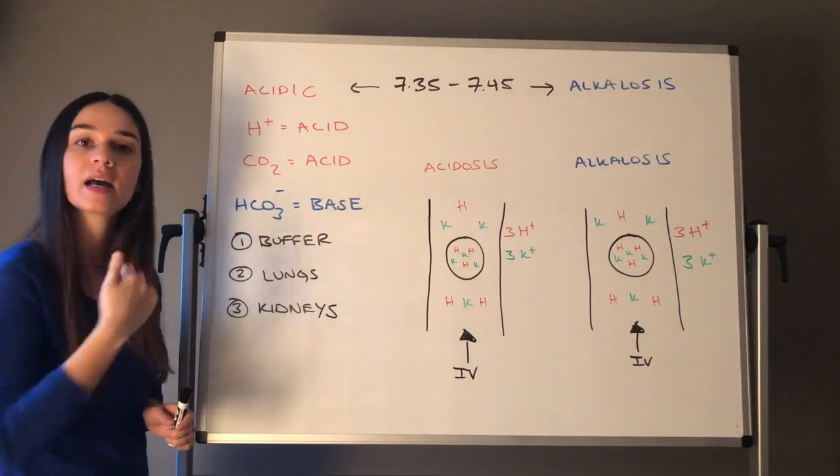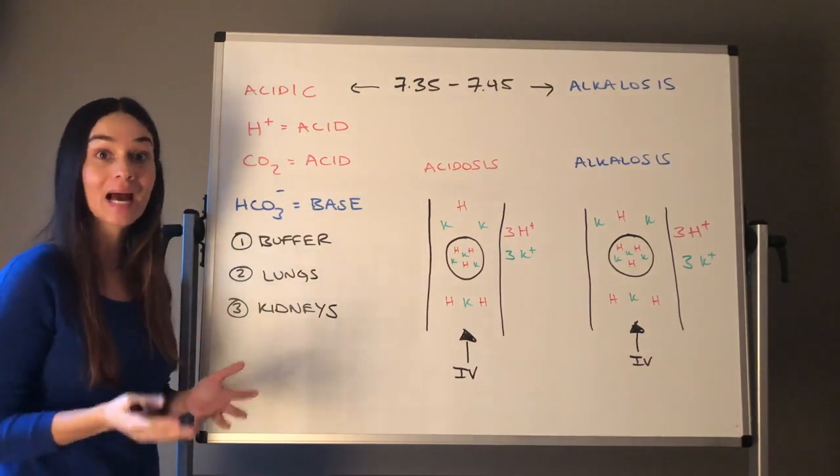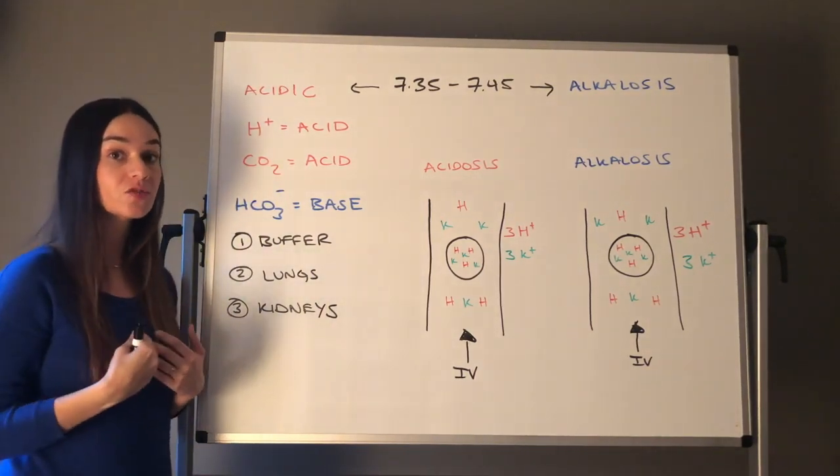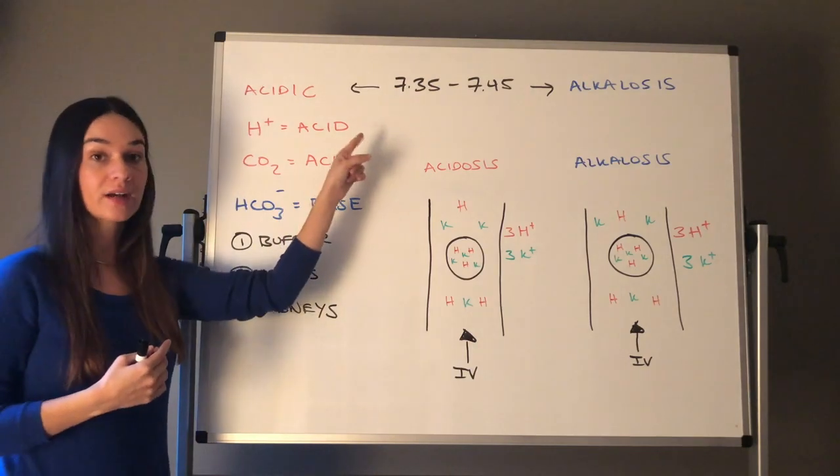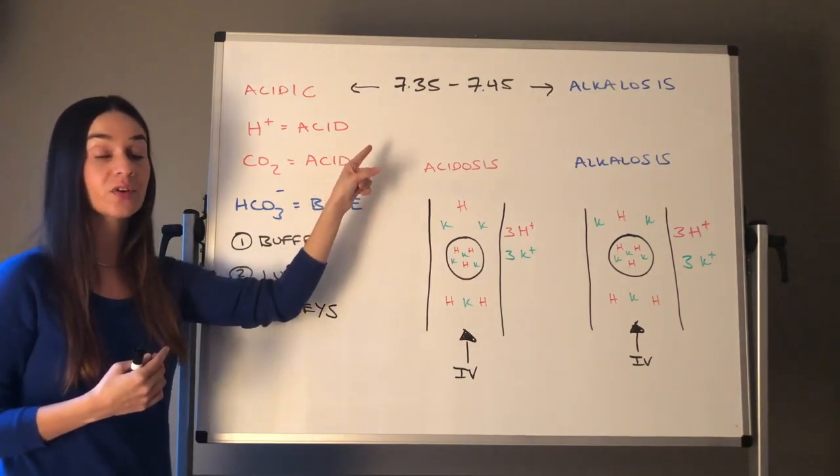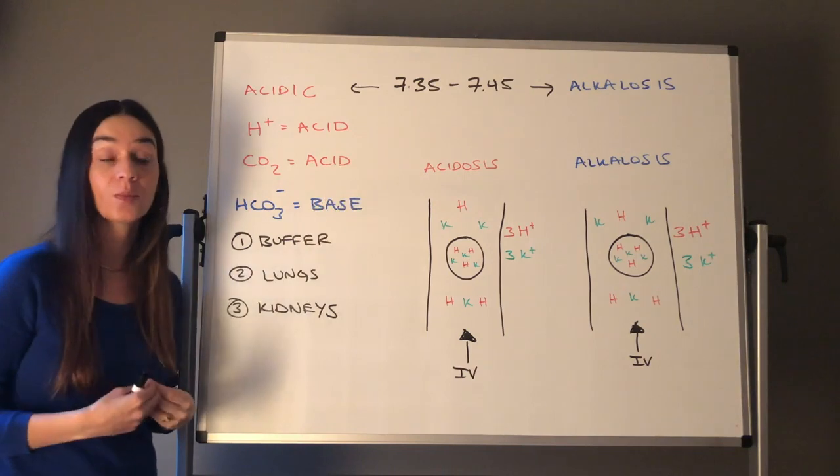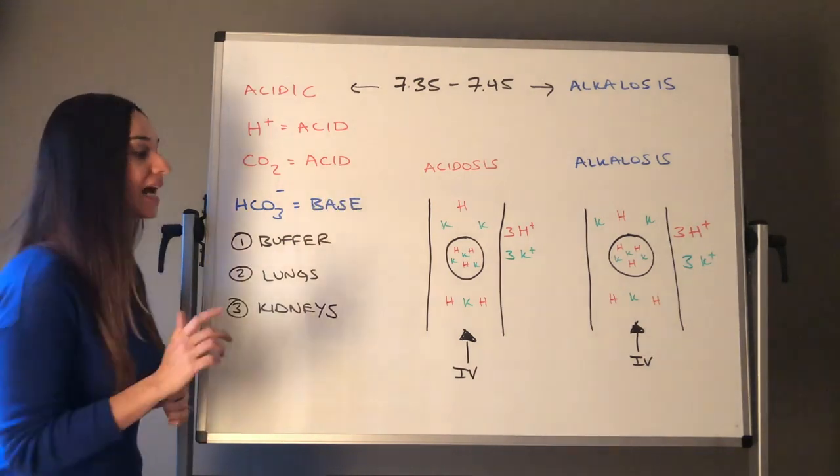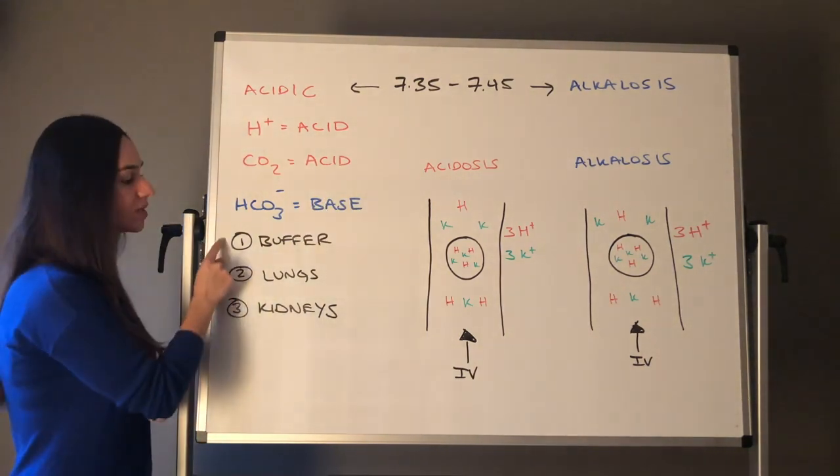Let's start with hydrogen ion and talk about the three systems that help maintain our acid-base balance. Remember, when we're in trouble, if we ever get outside of our homeostasis, the 7.35 to 7.45, our body will try to cope with these three systems.